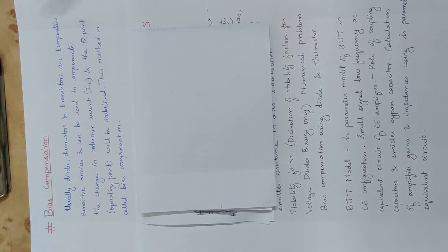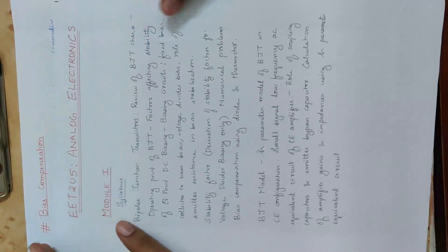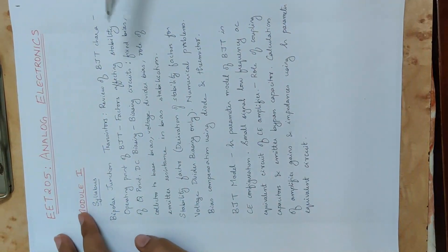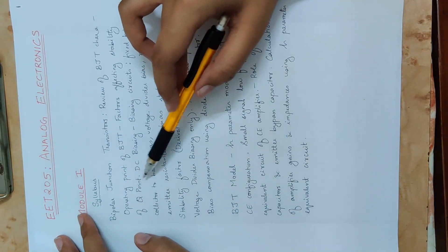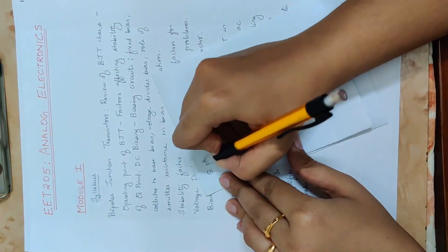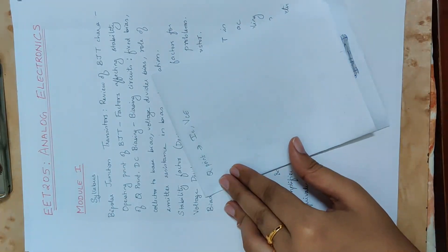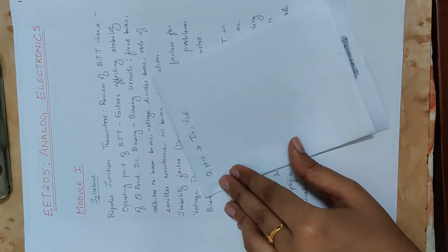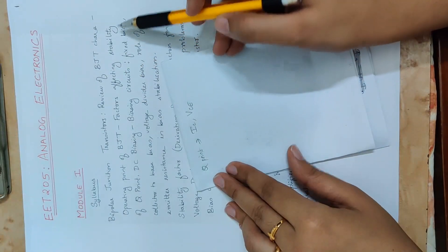Next topic is Bias Compensation. We covered the topic of the operating point of BJT, that is the Q point. The Q point is the operating point. These are the factors affecting the stability of the Q point.